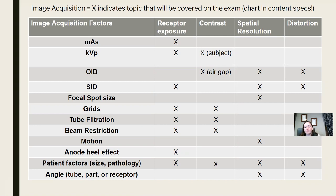Write yourself a sentence: MAS has what effect on receptor exposure, and what type of relationship is it? It's a direct relationship — if I increase MAS, I increase receptor exposure; if I decrease MAS, I decrease receptor exposure. The more you break it down into small pieces, the more likely you are to remember it.